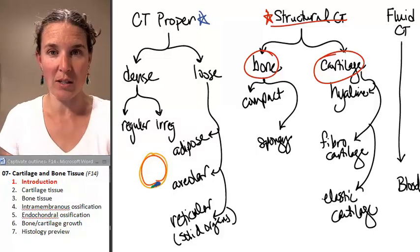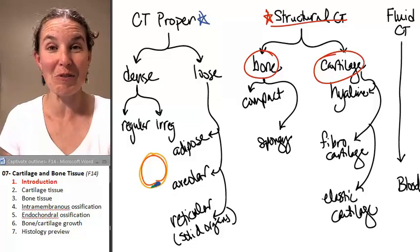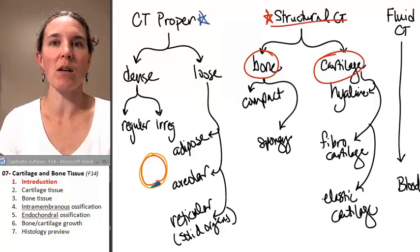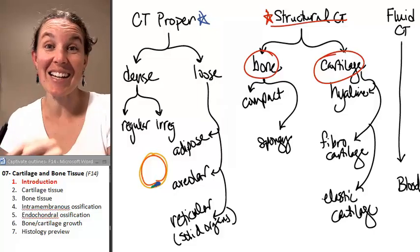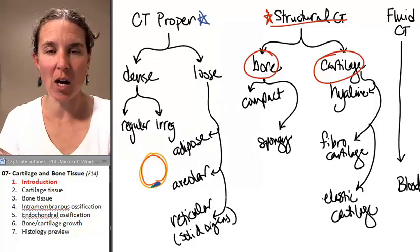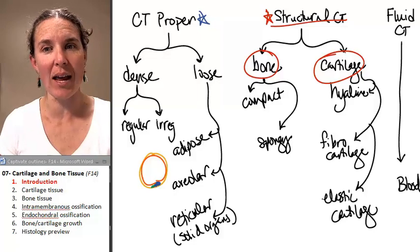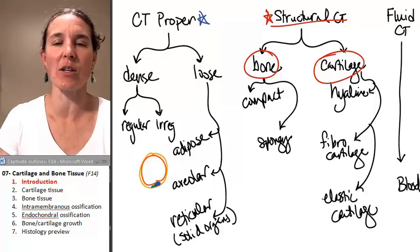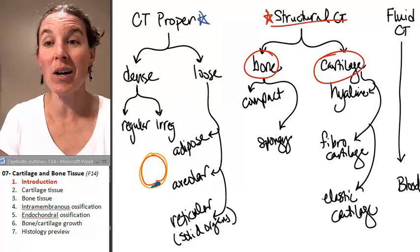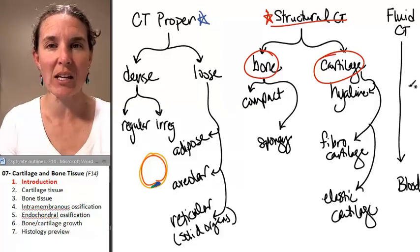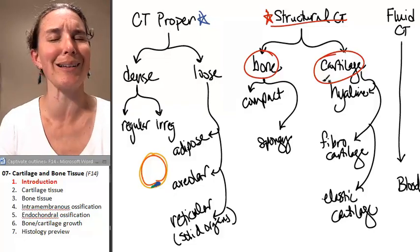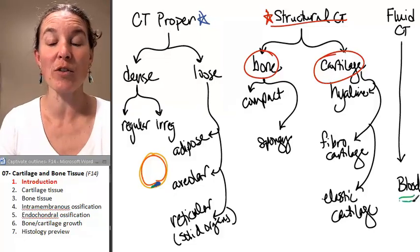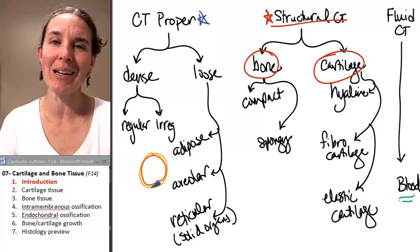Now, bone organs are definitely made of bone tissue, but bone organs also have other tissues in them. In the next lecture, we're going to spend the whole time talking about bone organs and how those things actually work. Now, we have one more kind of connective tissue before we've completed our full survey of connective tissue land, and that would be our fluid connective tissue, blood.